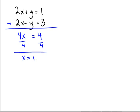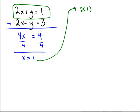If we suppose that x equals 1 and substitute this into the top equation we would get 2 times 1 plus y equals 1. 2 times 1 is 2 so that's 2 plus y equals 1, and if we subtract 2 from both sides we would get y equals negative 1.